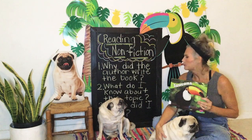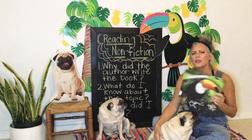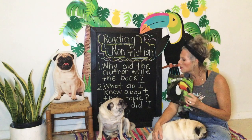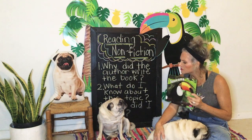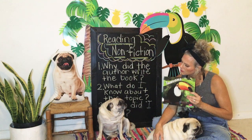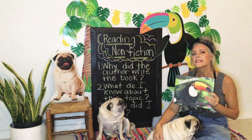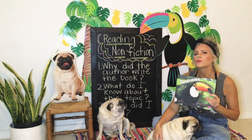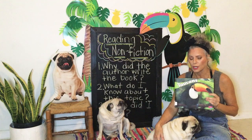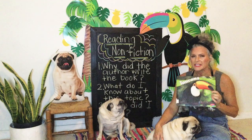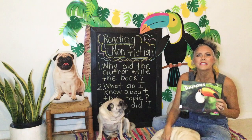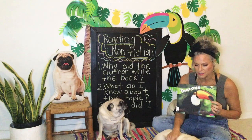Number two: what do I know about this topic? LeBron, what do you know about toucans? Do you know anything about toucans? He said he knows two things — he said he knows they're a bird and he's seen them on the front of a Froot Loops cereal box.